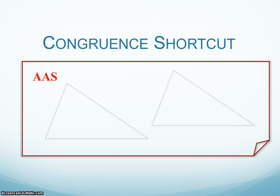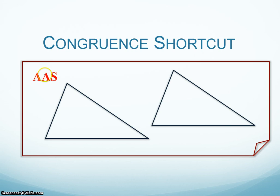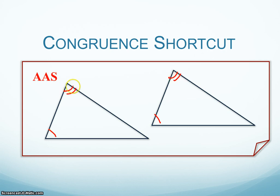The next one is angle-angle-side, AAS. So you have two angles, and then after the two angles, you have a side. So I have an angle congruent to an angle, and then another angle congruent to another angle, and then after my two angles, the next side.